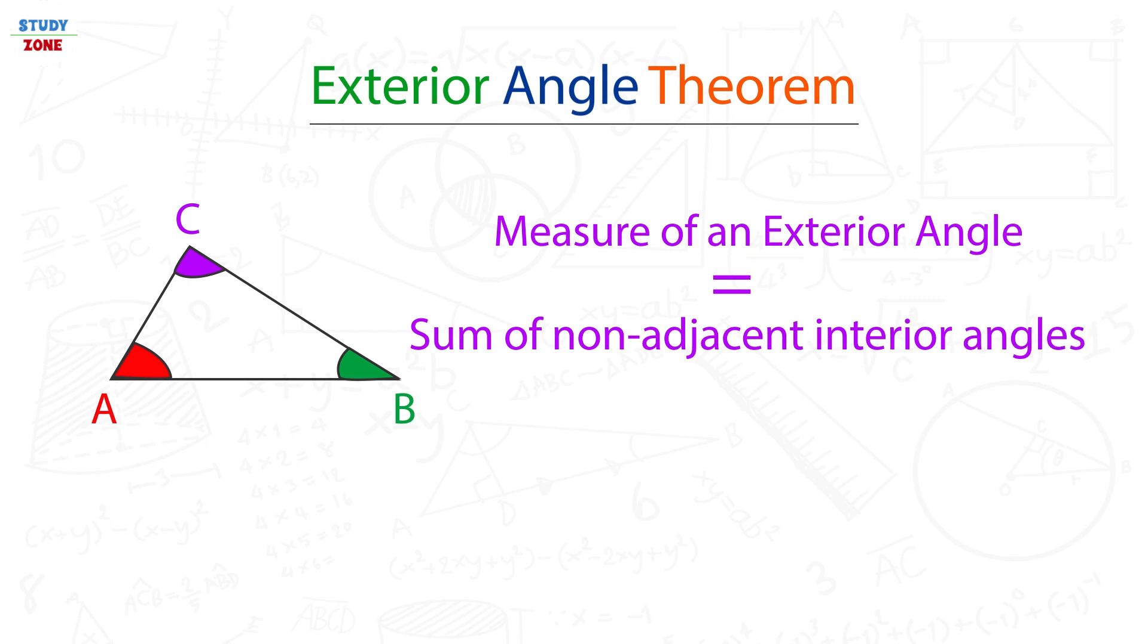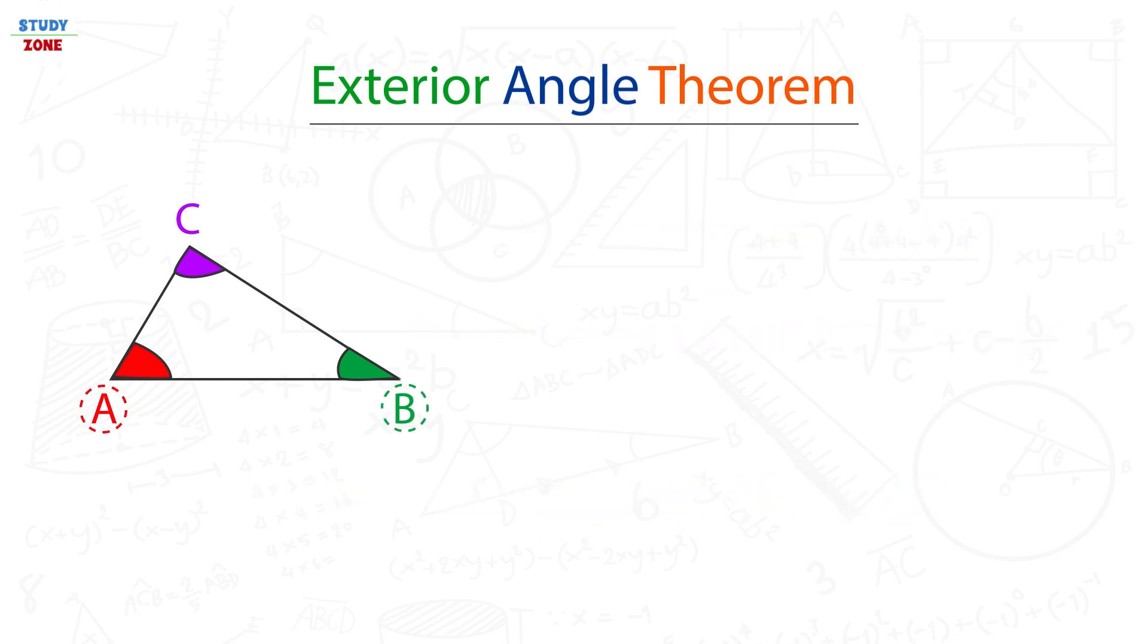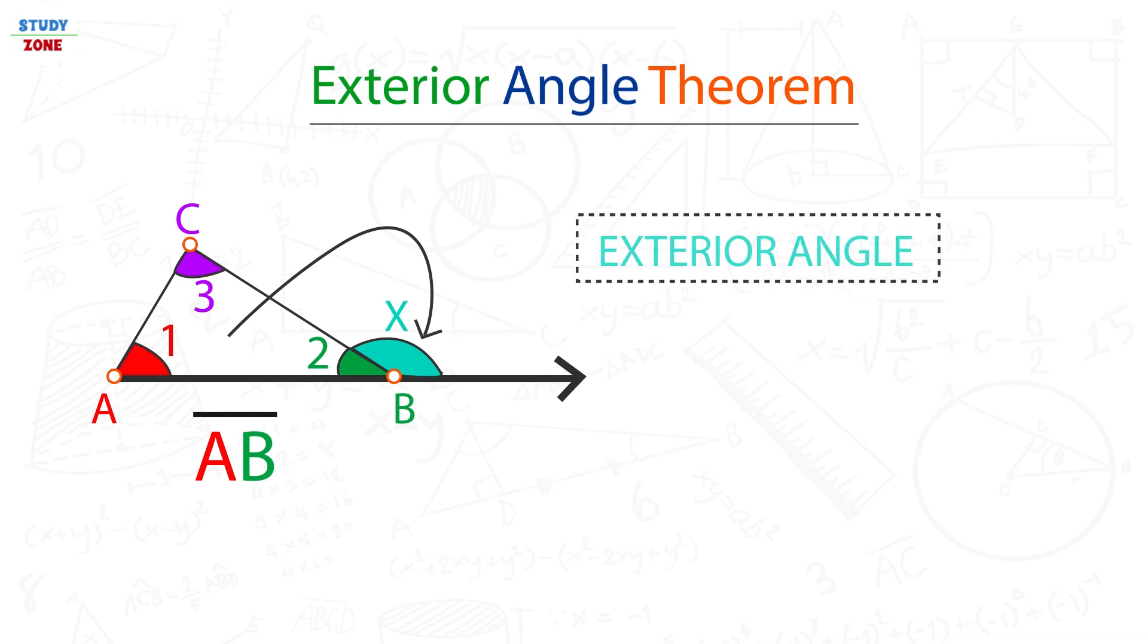Let us first learn what an exterior angle of a triangle is. As you can see, we have a triangle ABC with three interior angles named as angle 1, 2, and 3. If we extend any of its sides, say AB in this case, then the external angle named X here, formed outside the triangle, is known as the exterior angle of the triangle.